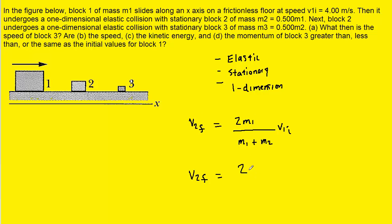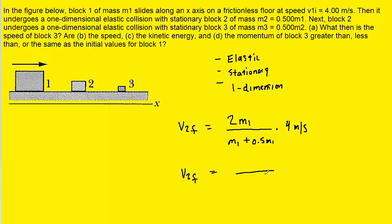The value of mass 1 isn't actually stated, so we have to leave that as the variable m1. And then for m2, we were told that that is equal to half the value of m1, so we're going to be plugging in 0.5 m1. Then we'll multiply by the initial velocity of block 1, which was stated to be 4 meters per second. In the denominator, we can combine the terms to make 1.5 m1, and then the m1 in the numerator will cancel with the m1 in the denominator, and of course we're still multiplying by 4 meters per second.